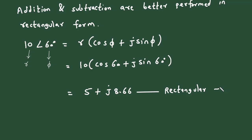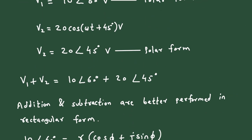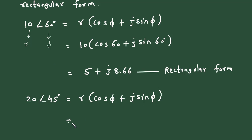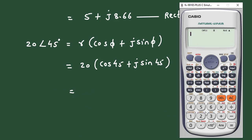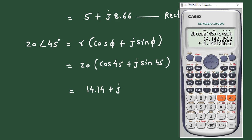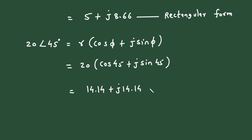Now for 20∠45°: using the same formula, r = 20 and φ = 45°, giving 20(cos 45° + j sin 45°). Solving in the calculator: 20(cos 45° + j sin 45°) = 14.14 + j14.14. This is the rectangular form of V2.